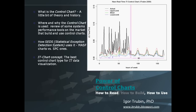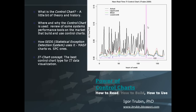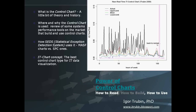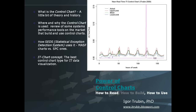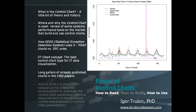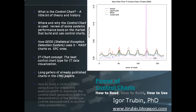During this video presentation, the following topics will be discussed: What is the control chart? Where is the control chart used? A review of some systems' performance tools that use it. How the statistical exception detection system uses it. Control chart types — MISF chart versus statistical process control chart. And a gallery of charts already published in CMG white papers, with explanation on how to read them. Enjoy the movie!